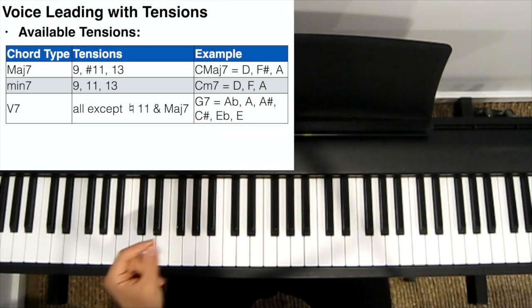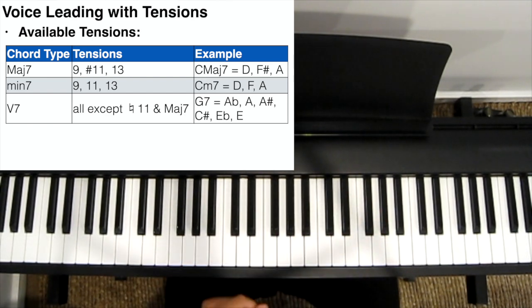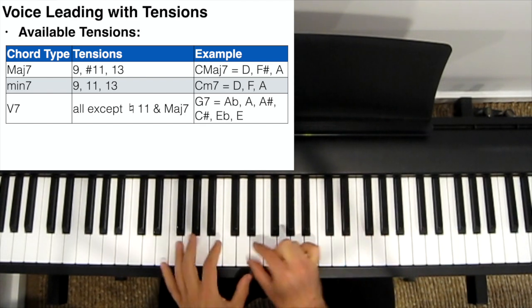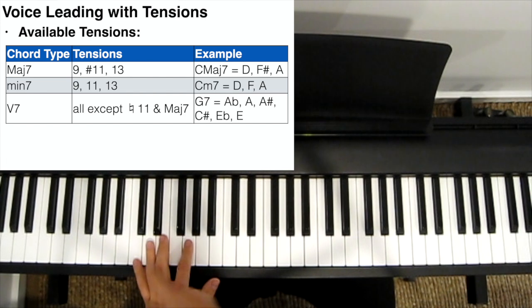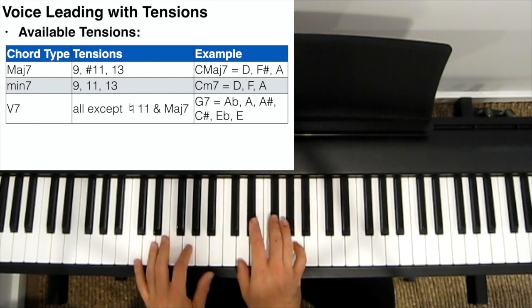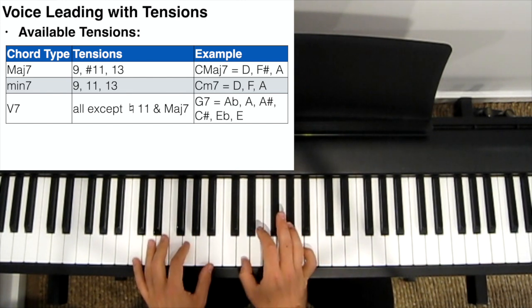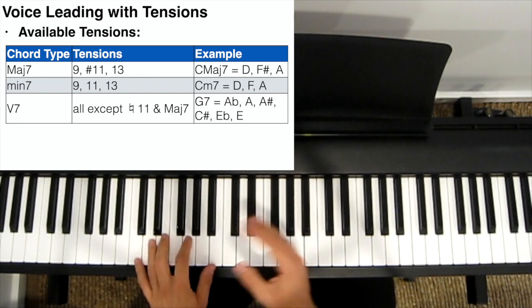First let's start with available tensions. Each chord type has particular tensions that can be used over it. An easy way to remember this is that for major and minor seven chords the tensions that you can play are a whole step above the triad. For example, over a C major seven chord the triad is C major, and the triad a whole step higher is D major. So you can use the D major triad over a C major seven chord. This gives you D, F sharp, and A, which is the 9th, sharp 11th, and 13th — the available tensions over a major seven chord.